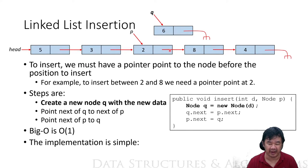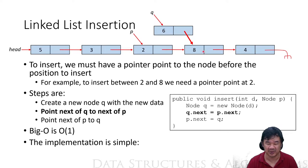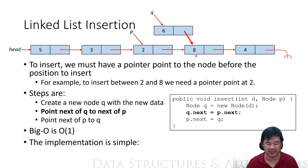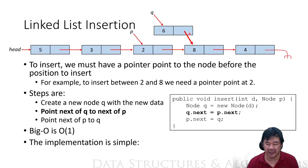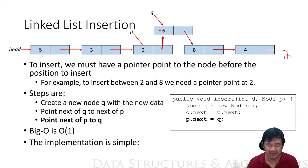What you have to do is set q.next to p.next first. If we set p.next to q first, this 8 is not going to have anything pointing to it. So first we have to point q.next to p.next, and then point p.next to q.